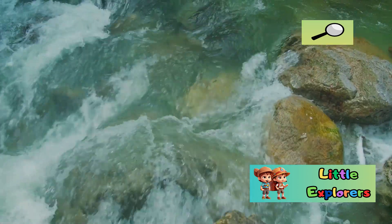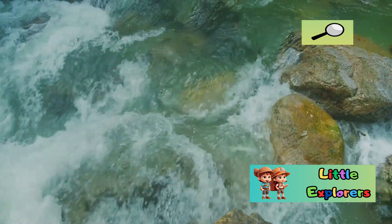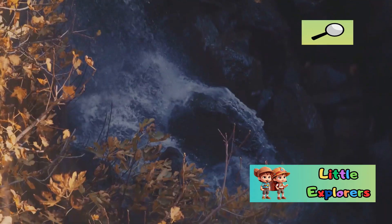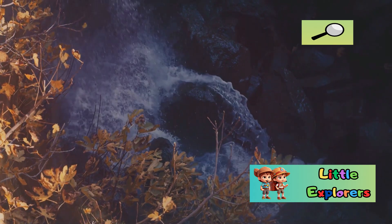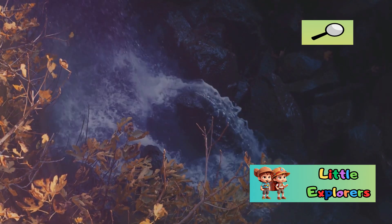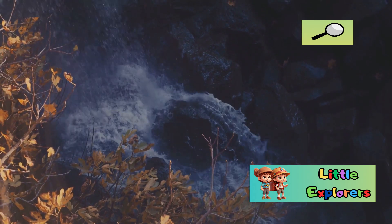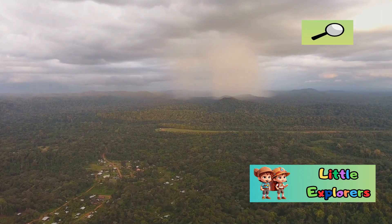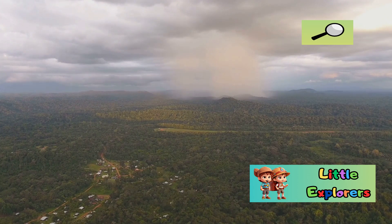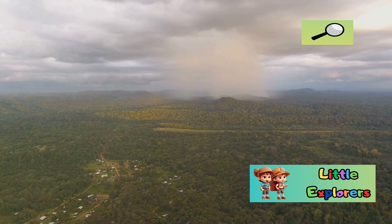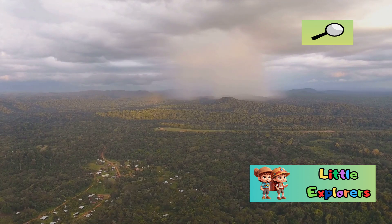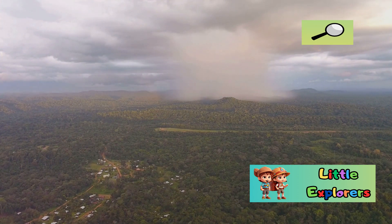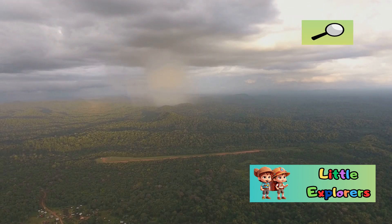But Earth is unique in having liquid water flowing freely on its surface. This free-flowing water shapes our landscapes, carves out rivers and valleys, and creates habitats for countless species. The dynamic nature of Earth's water systems is a testament to the planet's vibrant and ever-changing environment. This water is constantly moving, evaporating from oceans and lakes, forming clouds, and falling back to Earth as rain. This continuous movement, known as the water cycle, is essential for maintaining the balance of our ecosystems.